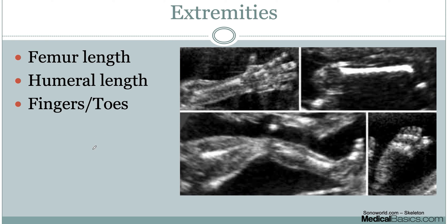Next is the extremities. This is important for sizing — you'll base size percentile on both the femoral diaphyseal length and the humeral diaphyseal length, along with brain and calvarium measurements. Also make sure there are five fingers and five toes. This matters beyond the obvious reason: polydactyly is associated with many other conditions that key you in to look more closely at specific related organs.